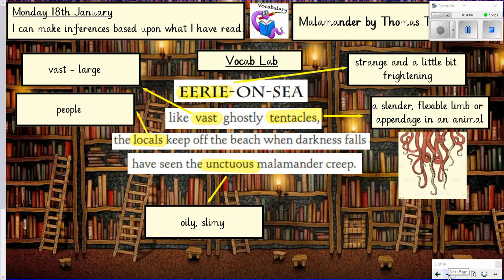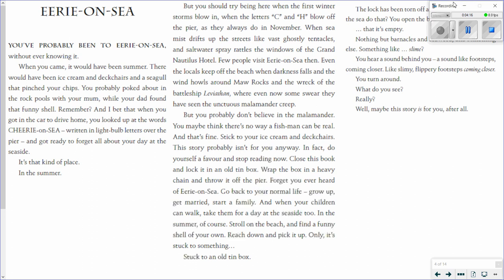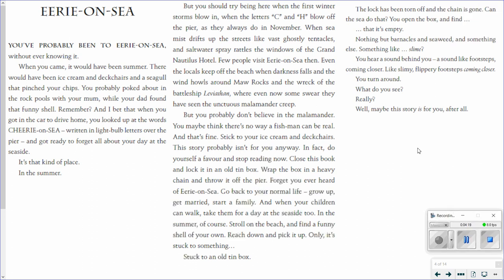Now I'm going to read the extract to you — you could also read it yourself as it's on the Teams area. This is chapter one: The Malamander. Eerie on Sea. You've probably been to Eerie on Sea without ever knowing it. When you came it would have been summer. There would have been ice cream and deck chairs and a seagull that pinched your chips. You probably poked about in the rock pools with your mum while your dad found that funny shell. Remember? And I bet when you got into the car to drive home you looked up at the words 'Cheery on Sea,' written in light bulbs over the pier, and got ready to forget all about your day at the seaside. It's that kind of place.